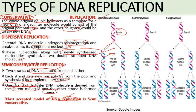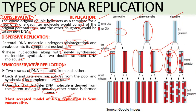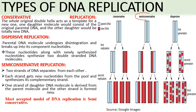To summarize the three models: in the semi-conservative model, one parental strand is conserved and one new strand is formed in each daughter molecule. In the conservative model, one daughter DNA retains the entire parental DNA and the other is completely new. In the dispersive model, the parental DNA breaks into small fragments and new fragments are synthesized between them, producing a combination of parental and new DNA pieces. The most accepted model is the semi-conservative mode of DNA replication.